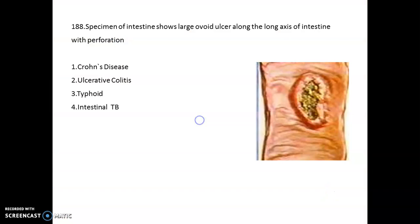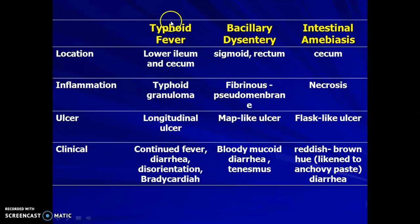The question shows a specimen of intestine with a large void ulcer along the long axis of the intestine with perforation. What does it indicate? It indicates typhoid. This is the typhoid longitudinal ulcer. Now let us understand the difference between typhoid fever, bacillary dysentery, and intestinal amoebiasis.